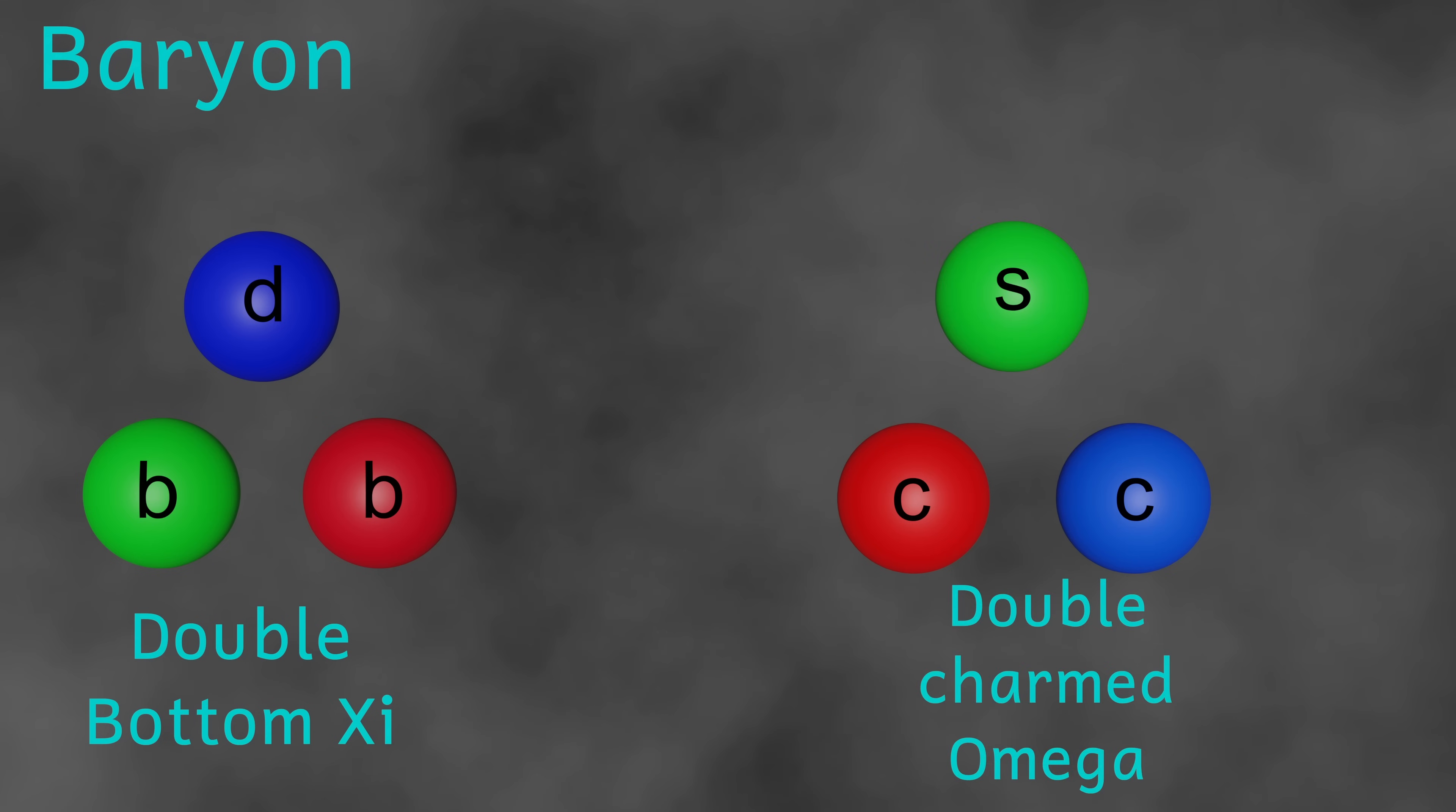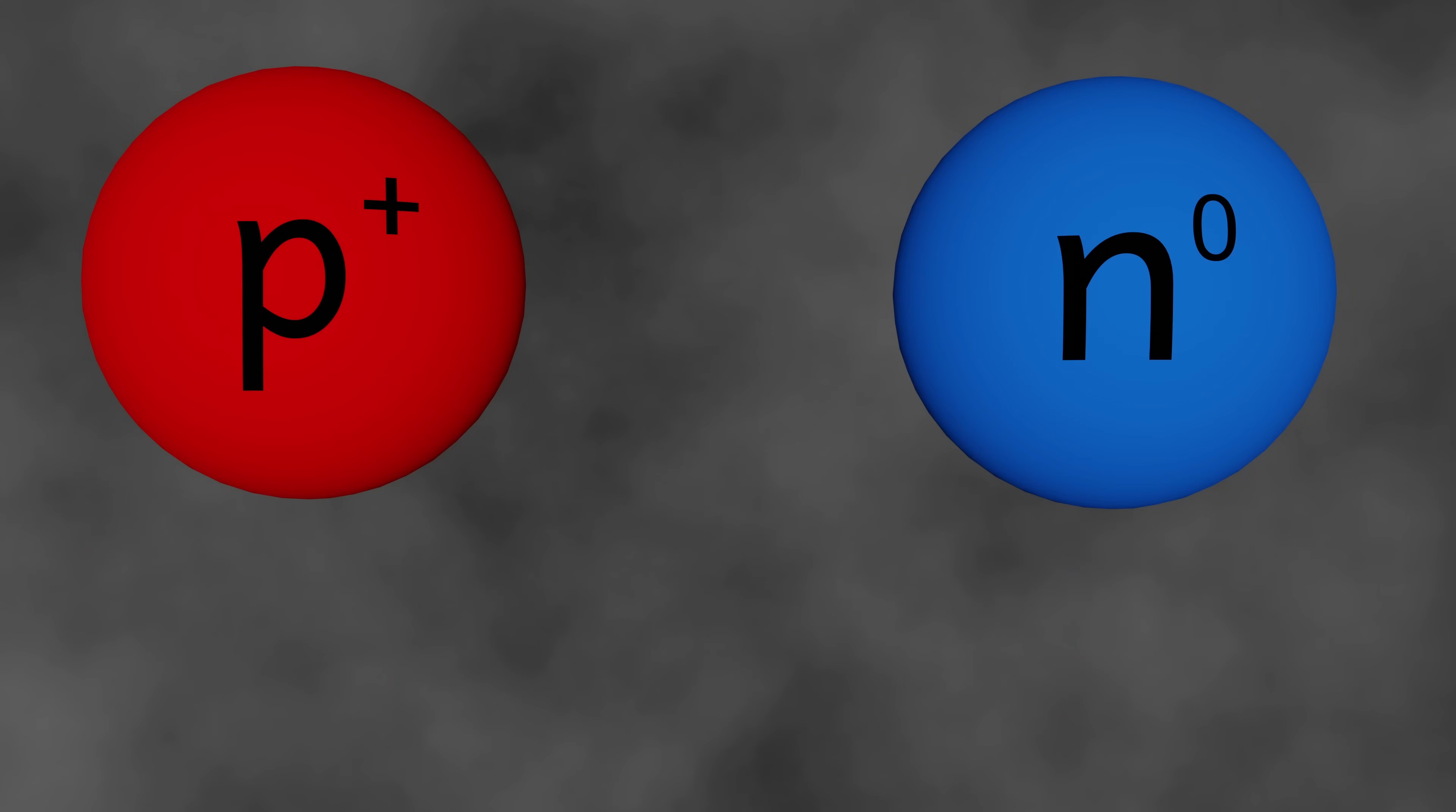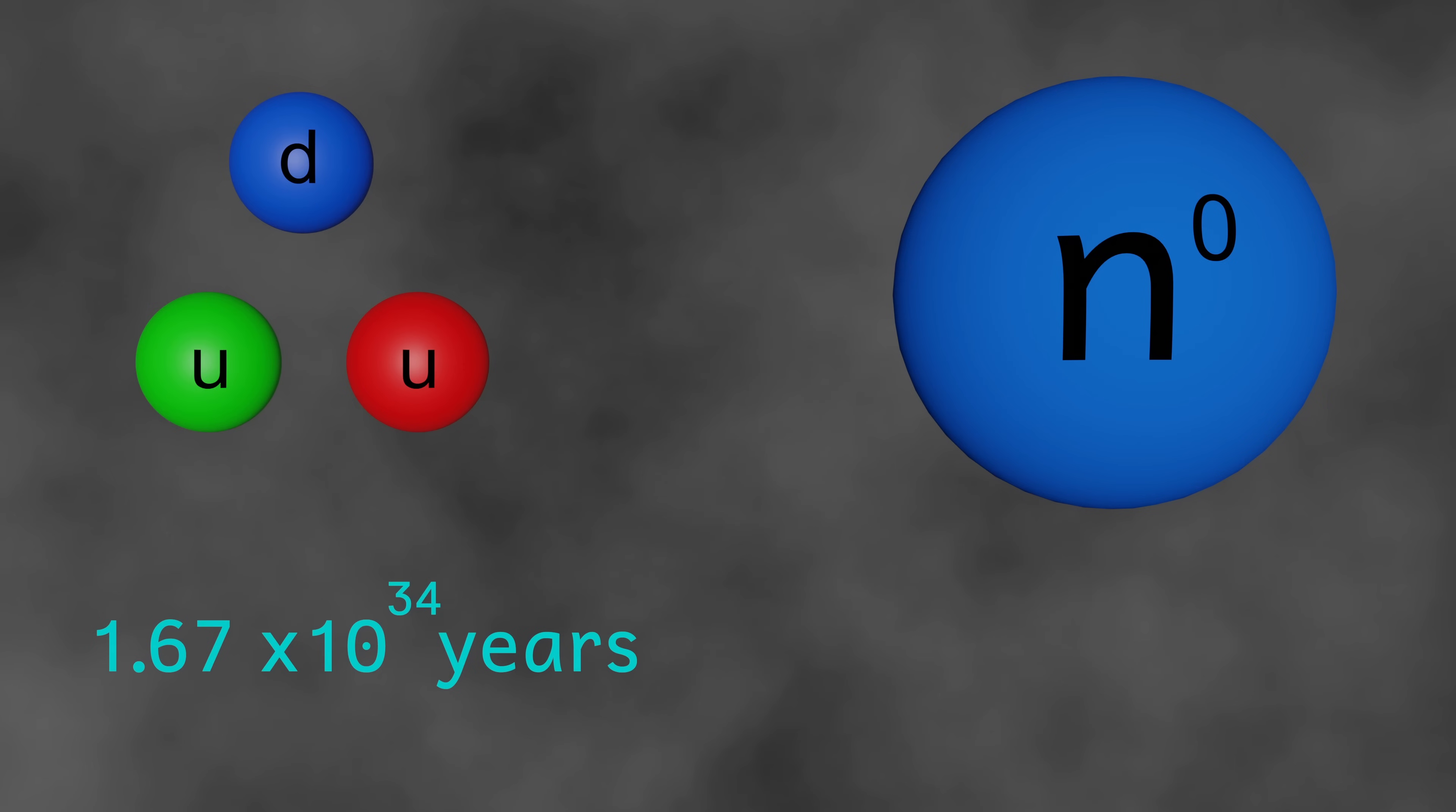And there are, however, two baryons that are mainly stable. These are the proton and the neutron. The proton is made from two up quarks and one down. This particle is stable and has an average lifespan, well, a half-life really, but an average lifespan of about 1.67 times 10 to the 34 years. This is many, many times longer than the current age of the universe.